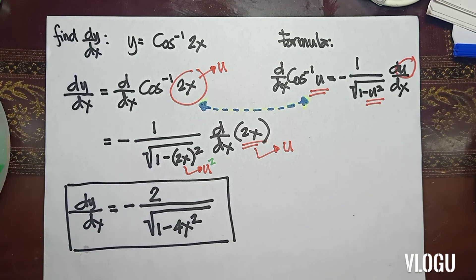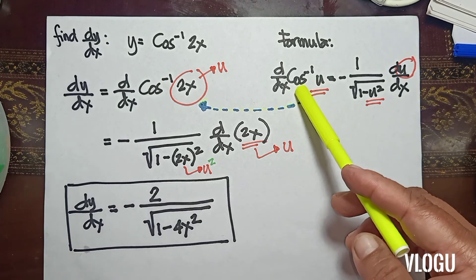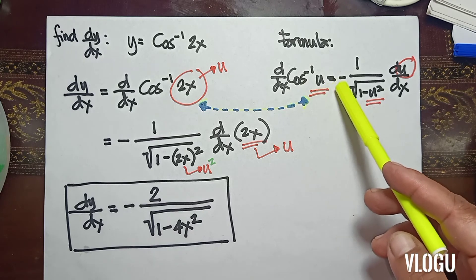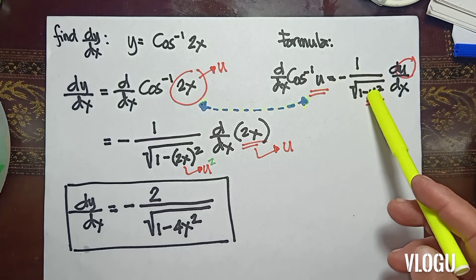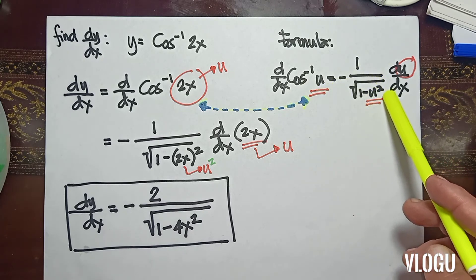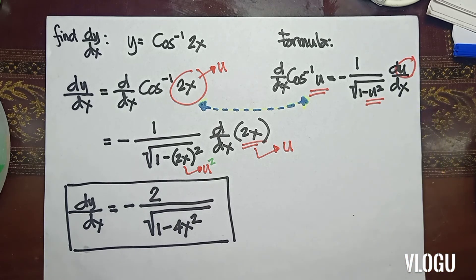The next example: y is equal to cosine inverse of 2x. The formula we are going to use is: derivative of cosine inverse u is equal to negative 1 over the square root of 1 minus u squared times du/dx. Our u in our example is represented by 2x.